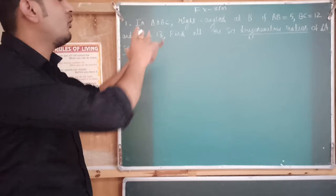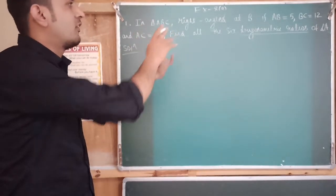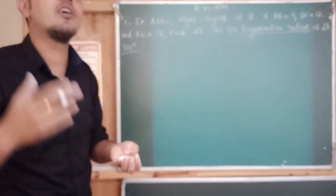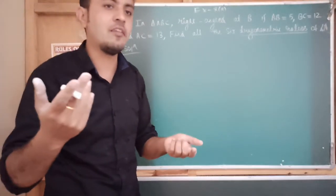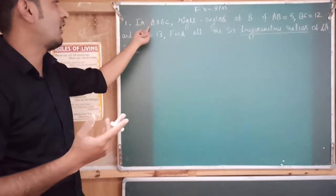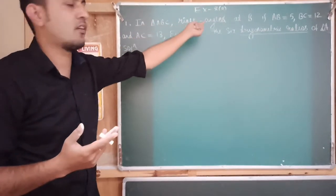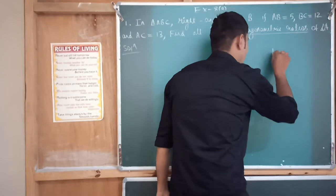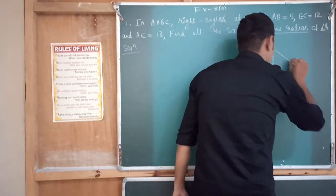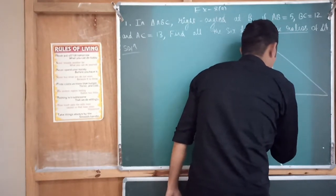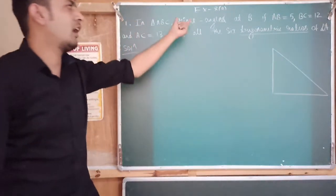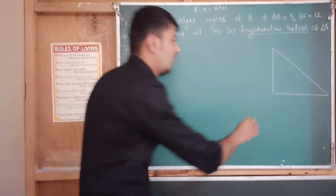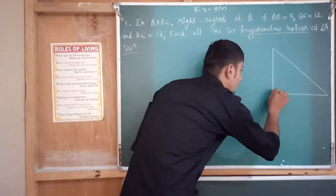Let us construct this problem — we'll try to draw the figure. As I have already told you, whenever we do trigonometry we consider a right-angle triangle. Here they say triangle ABC is a right-angle triangle, so let me draw one. You can see this is your right-angle triangle. From the question, the right angle is at B, so this vertex is B at 90 degrees.